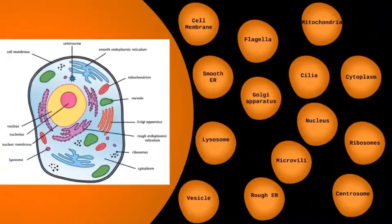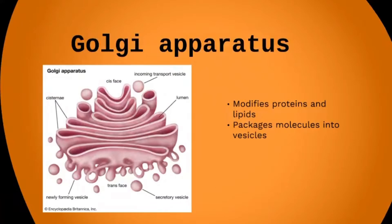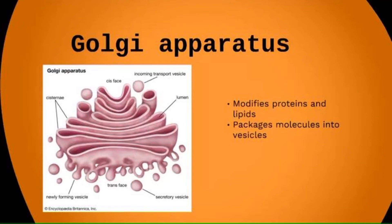The next organelle is the Golgi apparatus. These are flattened sacs that look quite similar to the smooth endoplasmic reticulum. They modify proteins and lipids before packaging them into Golgi vesicles to be transported to different places around the cell. Essentially, the Golgi apparatus packages up proteins, forms a membrane around them, and sends them where they need to go.